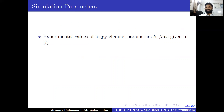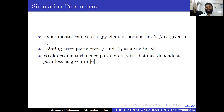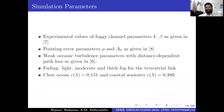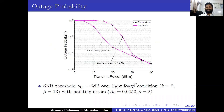For simulation and validation of the derived expressions, we use experimental values of the channel parameters: foggy channel, pointing error parameters, and turbulence. For the underwater turbulence channels, we consider different types of seawater — clear ocean and coastal seawater. Accordingly, we use the values of C_λ given in the literature. The first performance metric considered is outage probability.